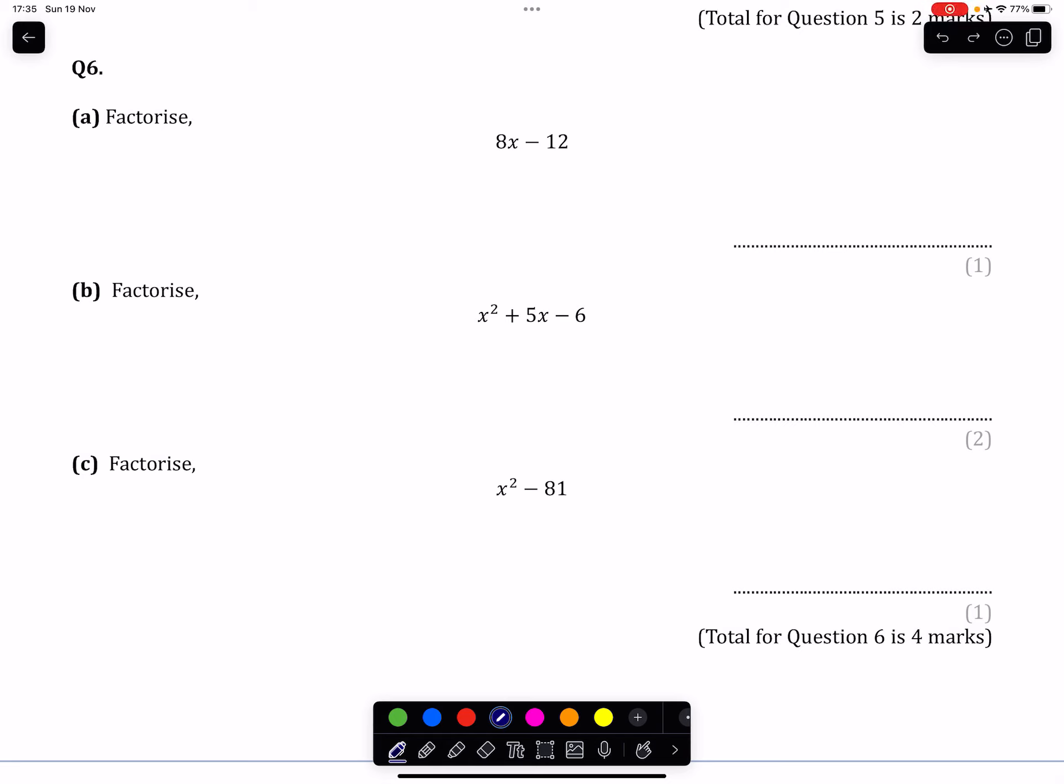Question 6. Factorize 8x take away 12. The first step of factorizing is to look for the highest common factor. Both of these terms can be divided by 4, meaning that I can take 4 out as a highest common factor.